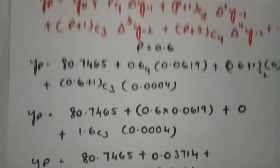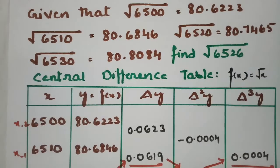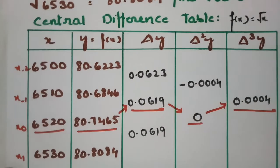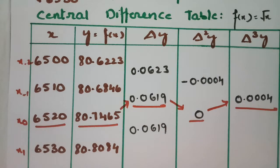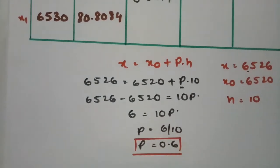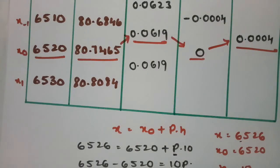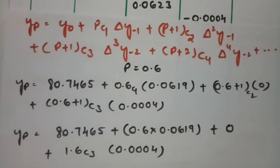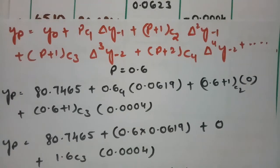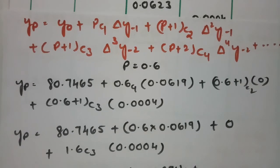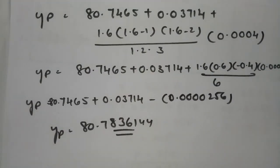This is how we solve the problem. First create the central difference table, find the p value, then apply the Gauss's backward formula. Substitution with a calculator makes this straightforward. Thank you so much — if you liked the video, please subscribe.